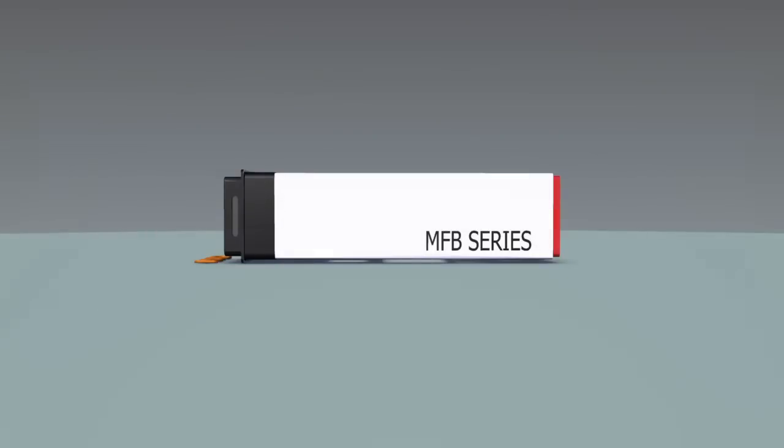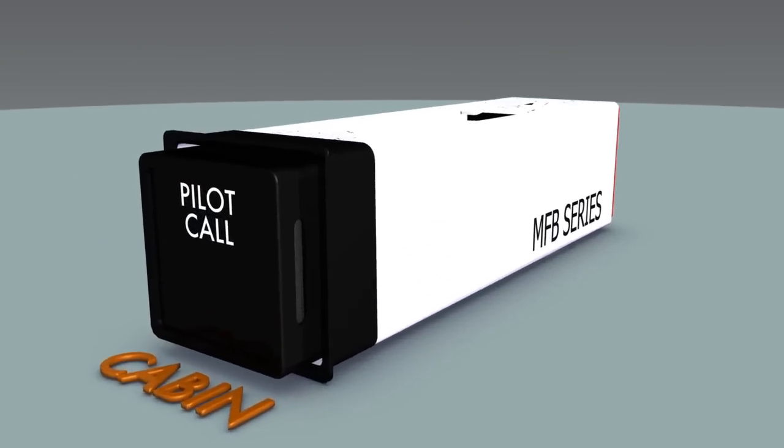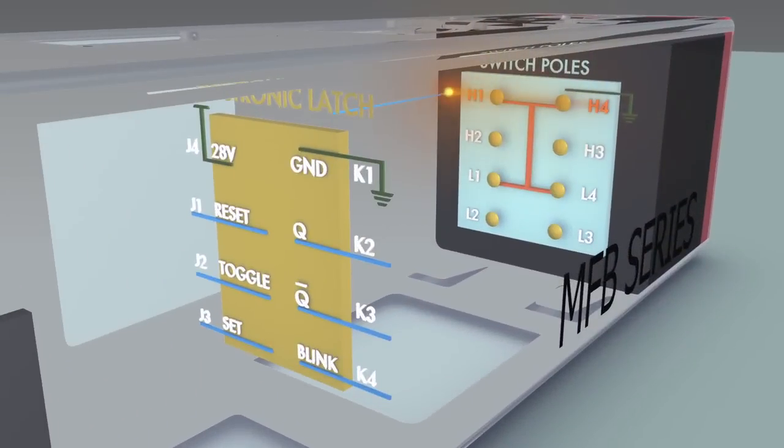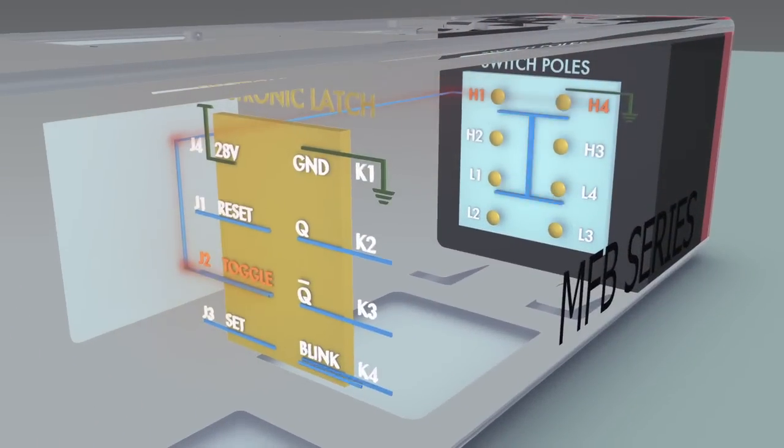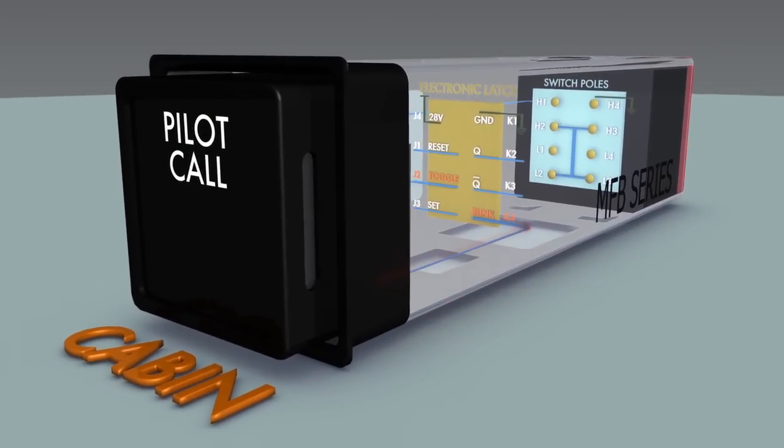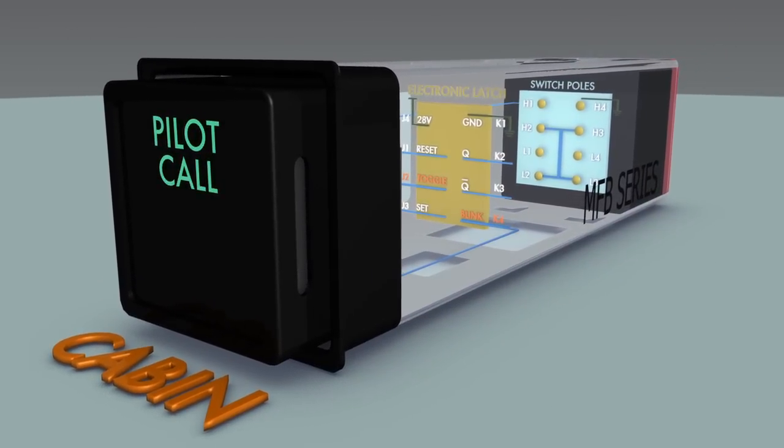To initiate the call, a remote pilot call switch located in the cabin is actuated. This applies ground to the toggle input of the Vivisun Logic Series electronic latch. This action activates the blink output, causing the pilot call switch to blink in a simulated ringer mode.